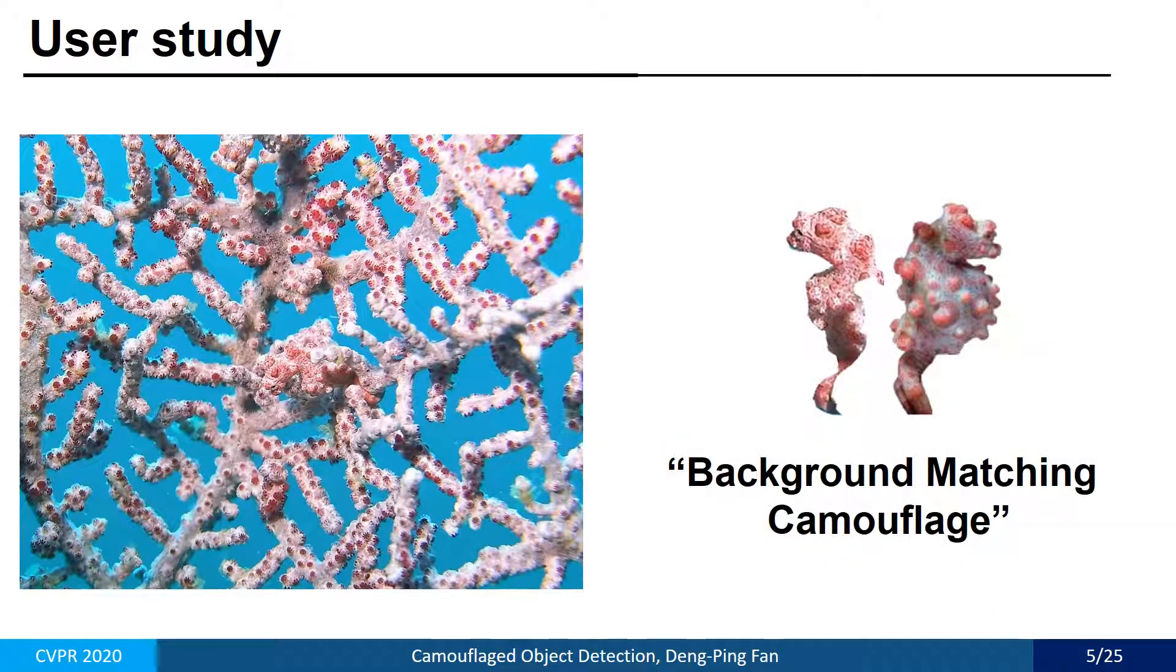Biologists call this phenomenon background-matching camouflage, where an animal attempts to adapt their body's coloring to match perfectly with the surroundings in order to avoid recognition.